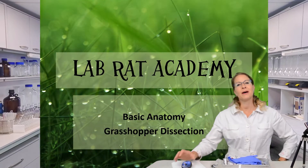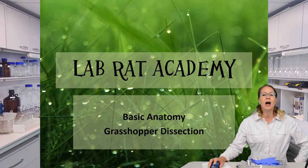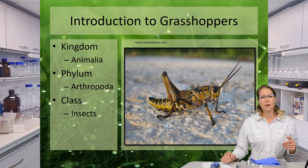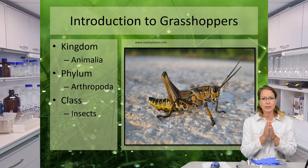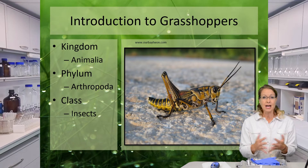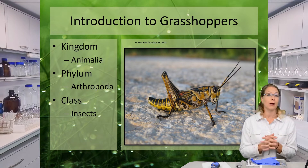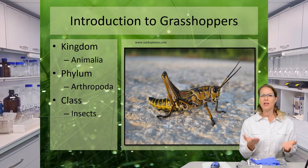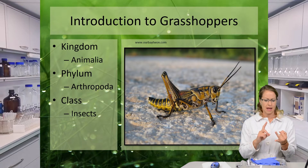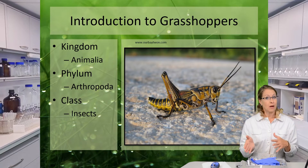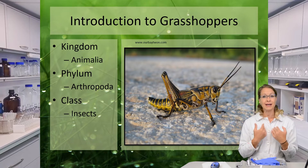Let's take a look at the background about the grasshopper so we can know what we're looking at when we start dissecting it. These grasshoppers are in a particular kingdom, which means they have a special classification about what type of living organism they are. There are six different kingdoms — animal, plants, fungus, protists, and bacteria — and these grasshoppers are in the animalia kingdom, just like us.